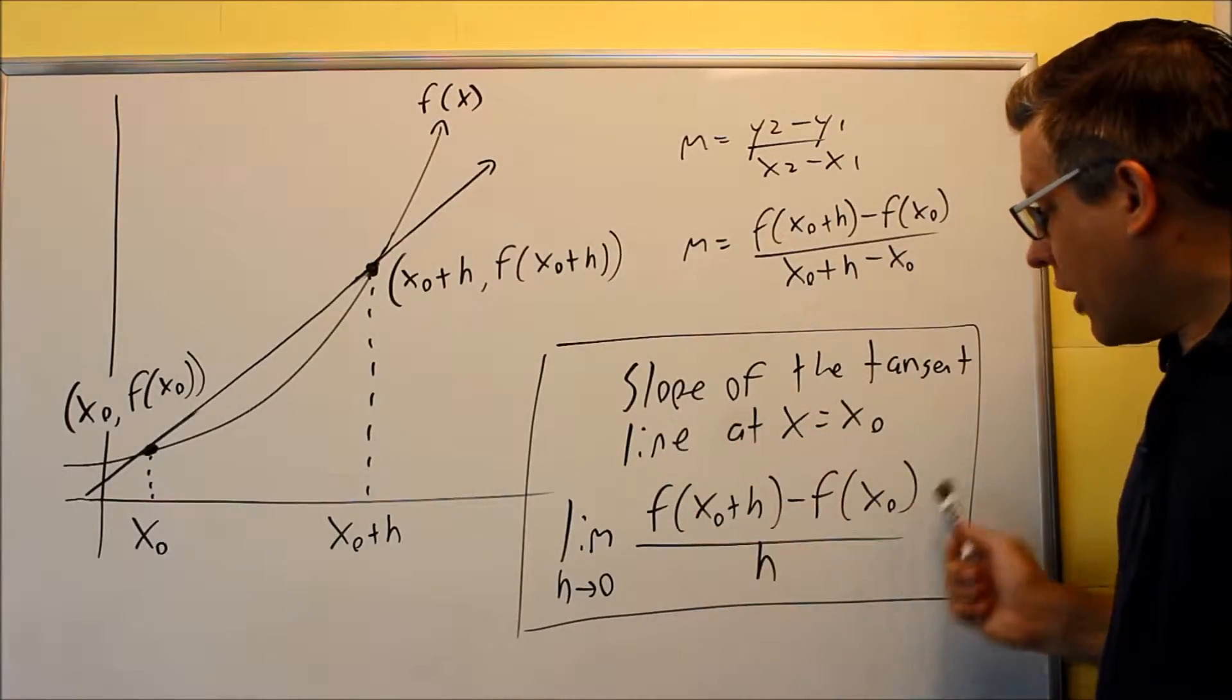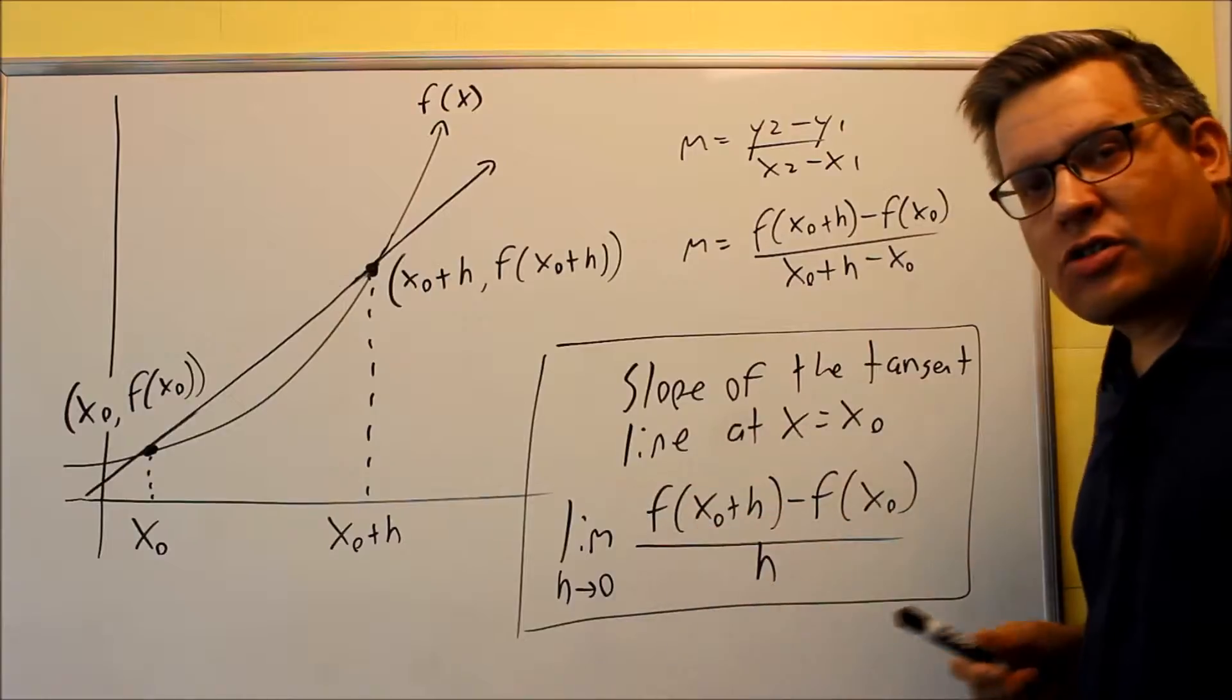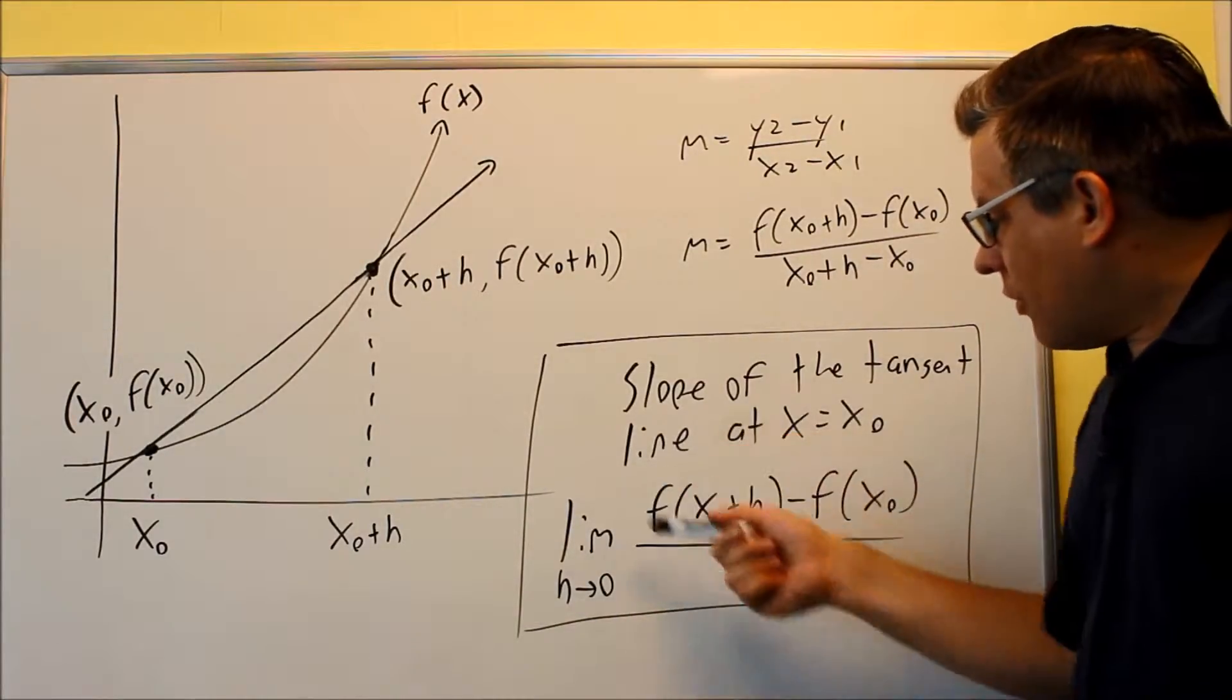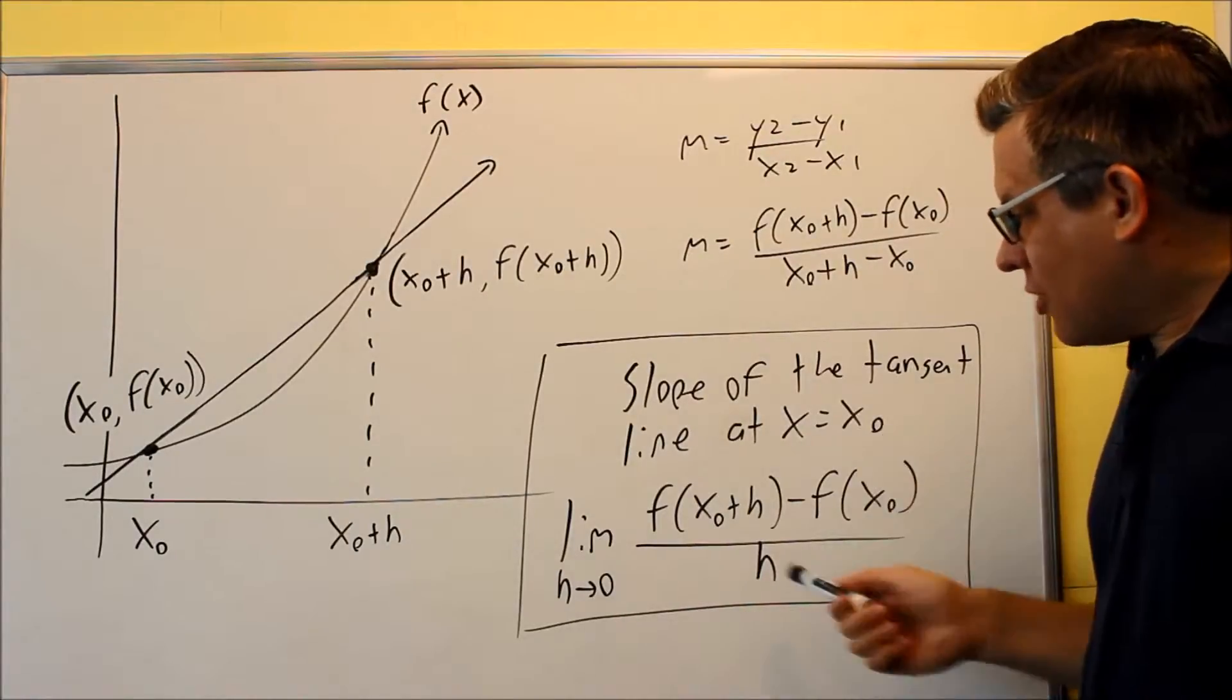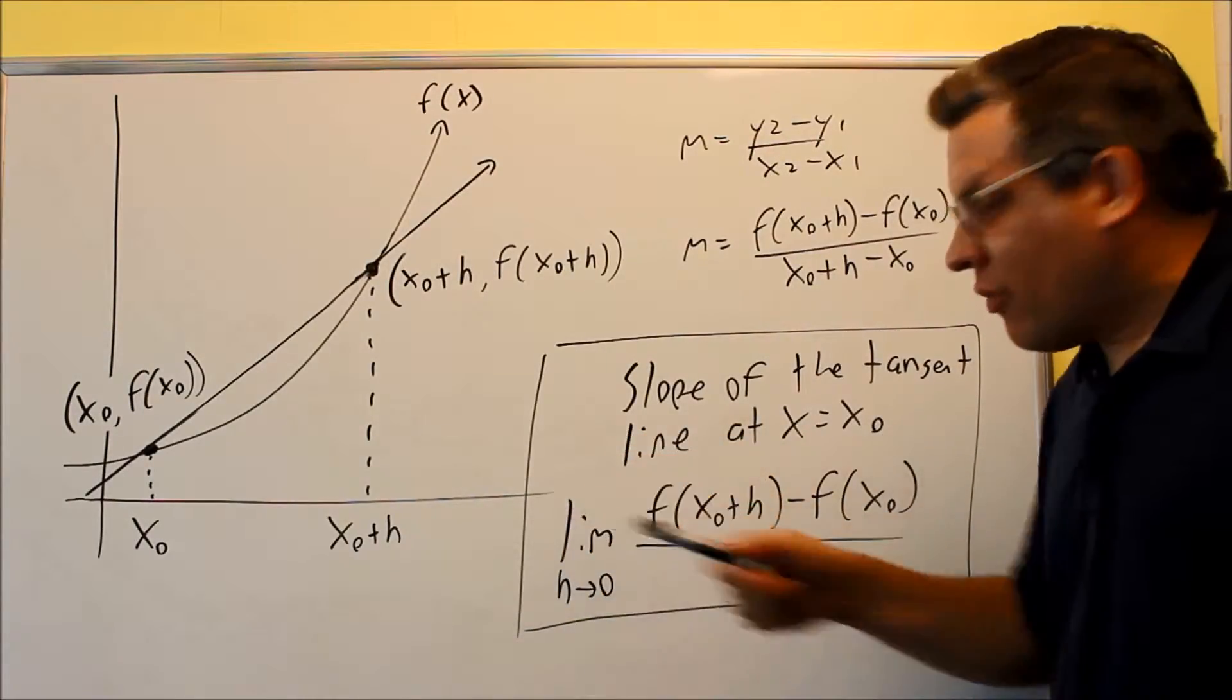Now the formula that you're left with is going to be this one right here, and that should be a formula that should look familiar. In pre-calculus, this is known as the difference quotient. But we have an addition added to it. We have a limit.